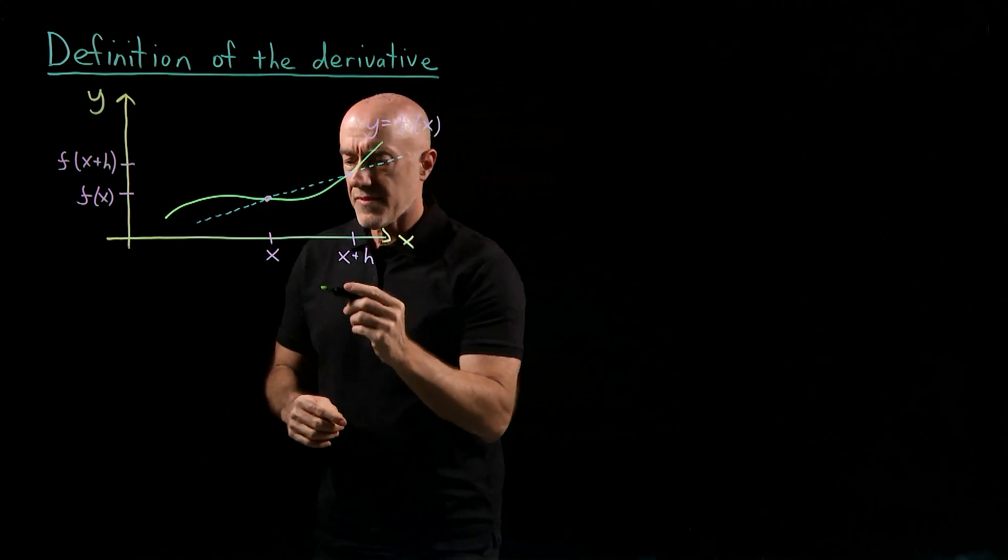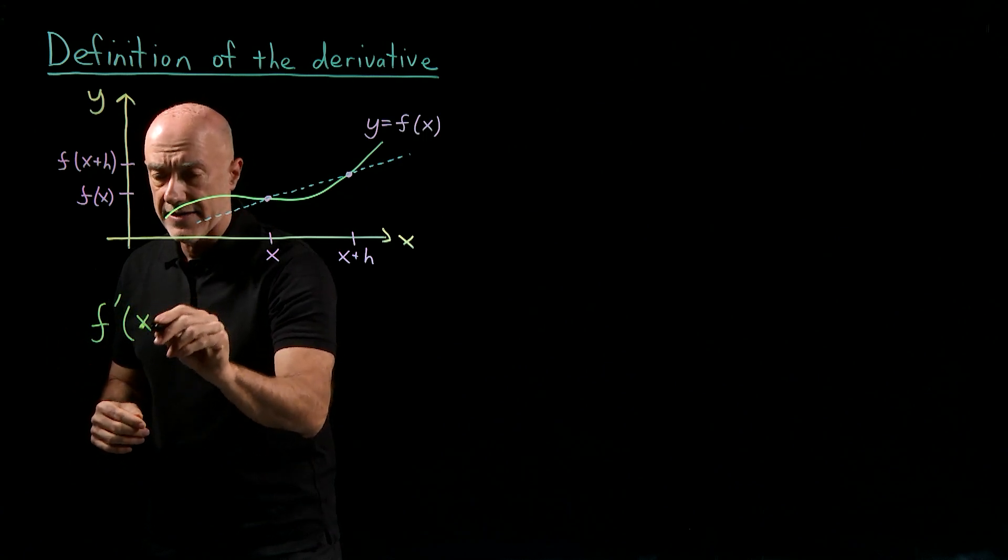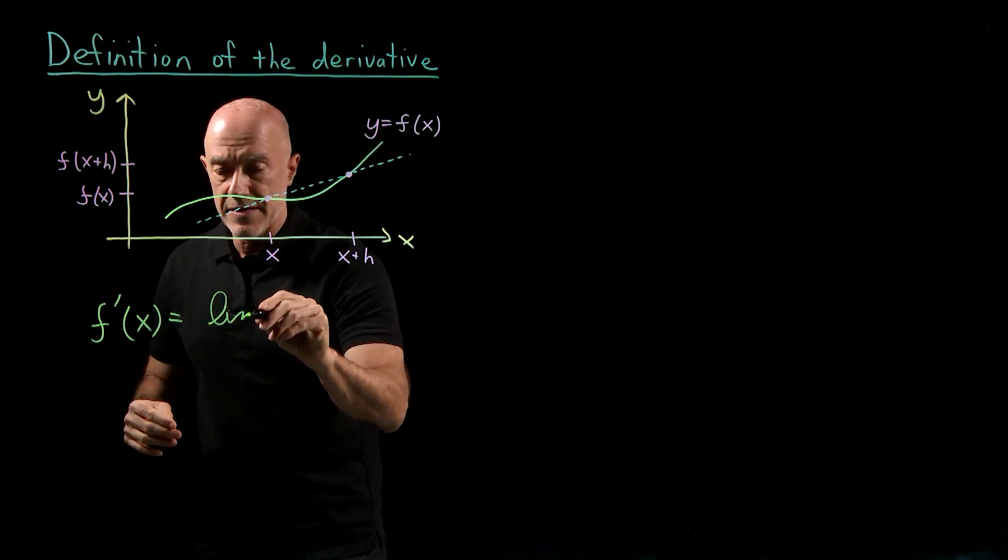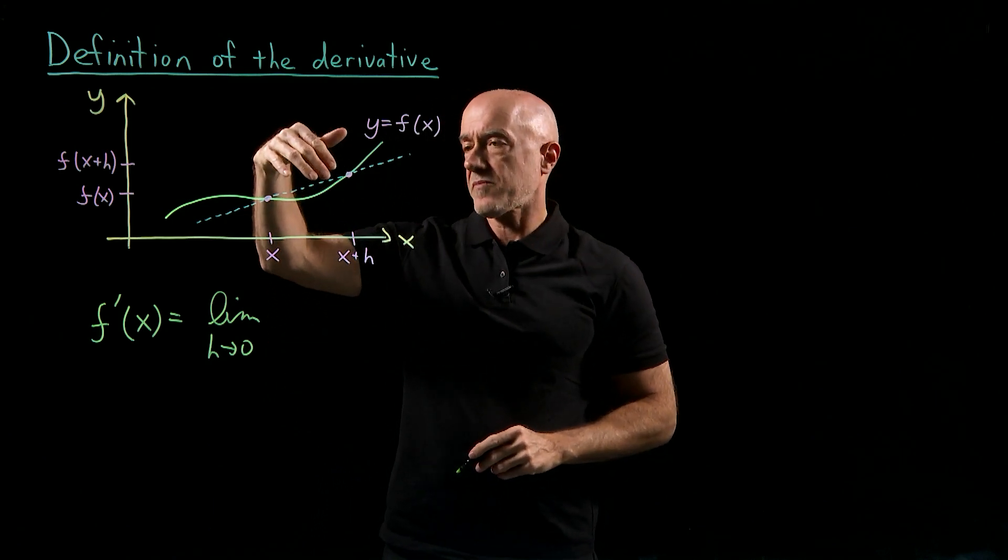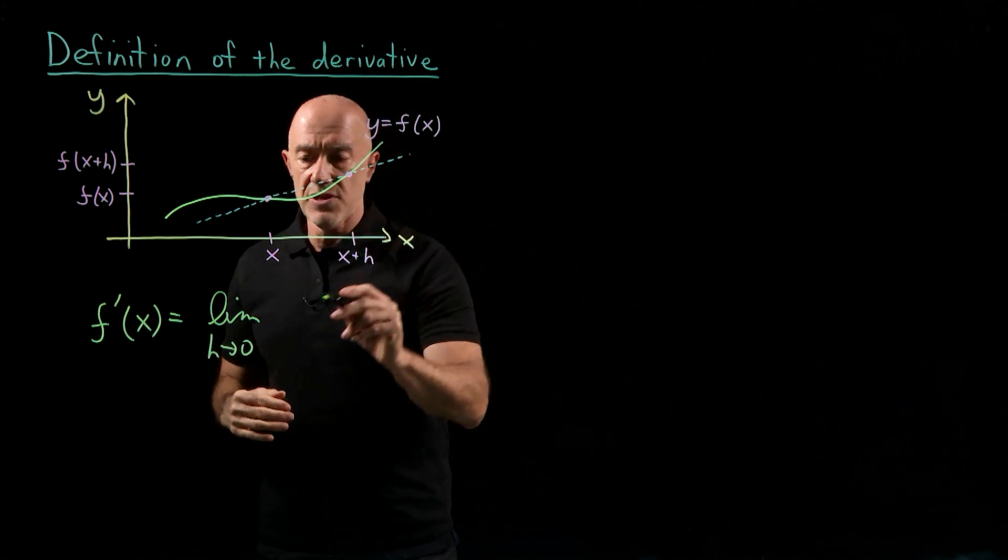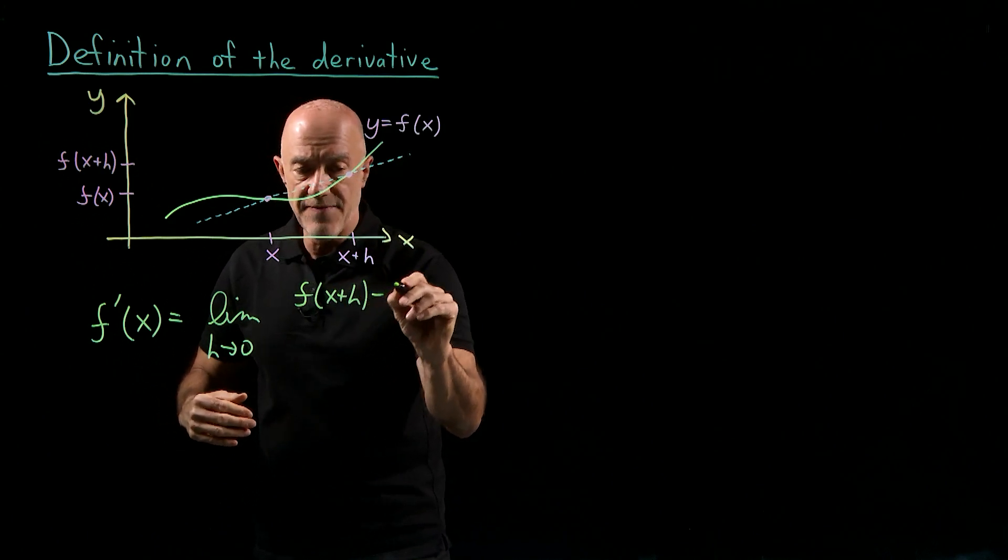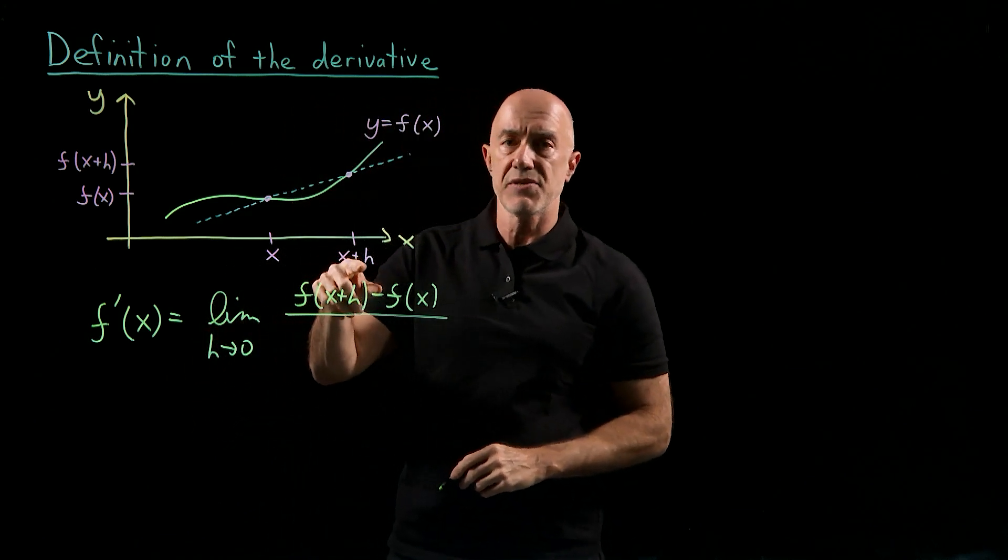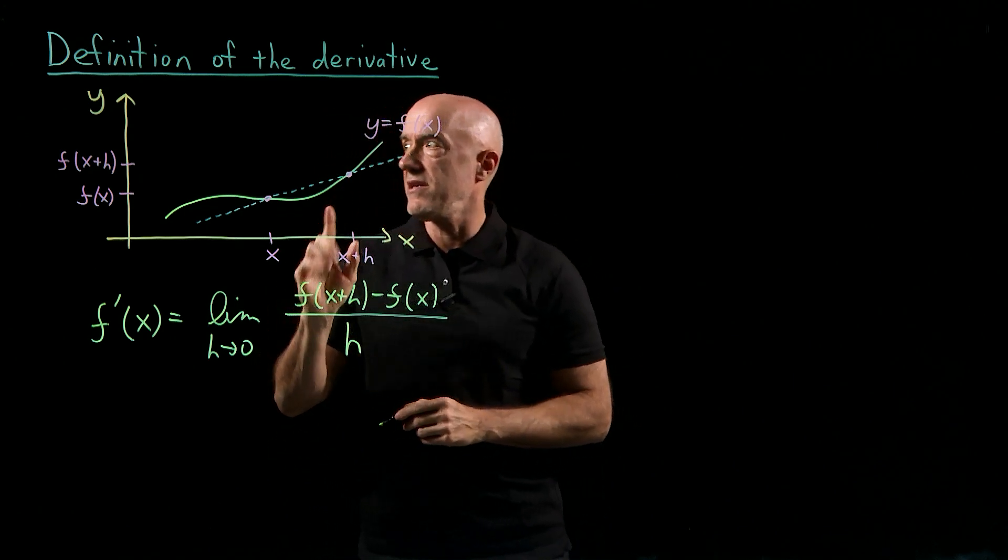So how do we do that? We define the derivative of the function with this notation, f prime of x, and we're bringing h to zero, so it's the limit as h goes to zero of the rise over the run. The change in the y over the change in the x. So the change in the y is f of x plus h minus f of x, and the change in the x is x plus h minus x, which is just h. And that's the definition of the derivative.